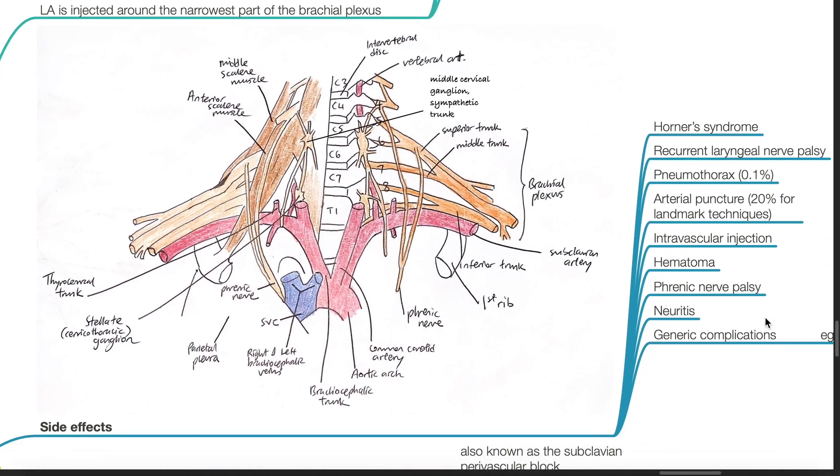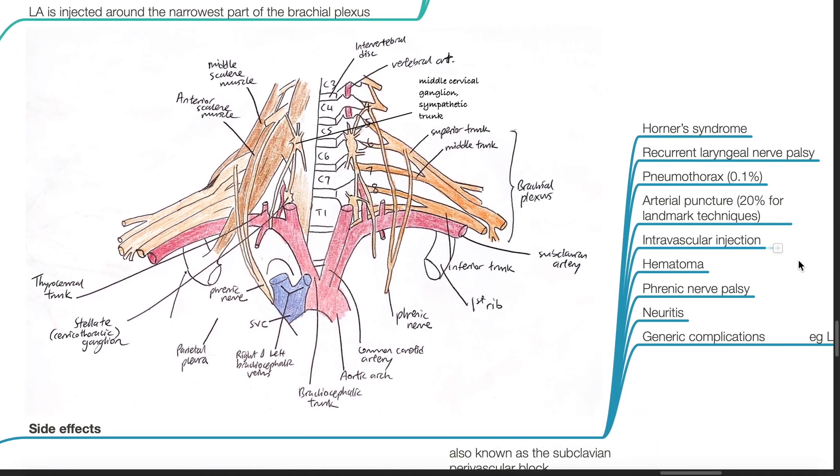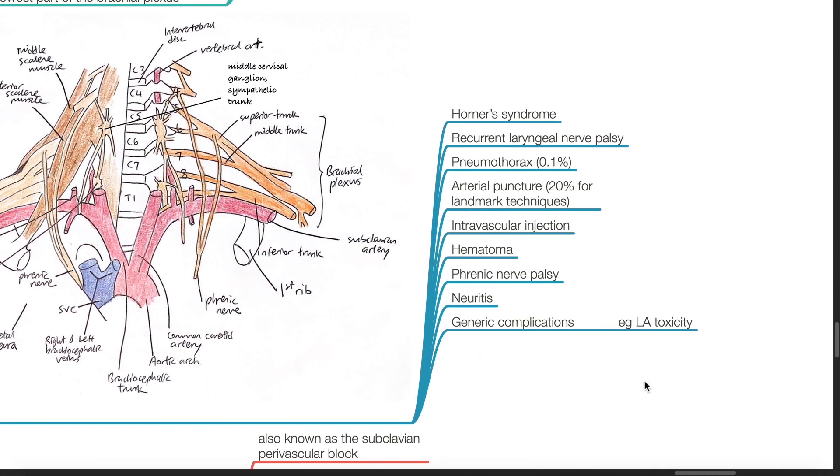Side effects include Horner's syndrome, recurrent laryngeal nerve palsy, pneumothorax 0.1%, arterial puncture up to 20% for landmark techniques, intravascular injection, hematoma, phrenic nerve palsy, neuritis, and general complications such as local anesthetic toxicity.